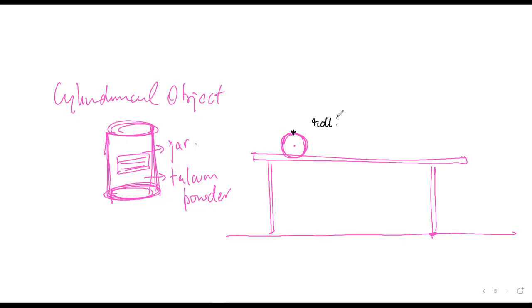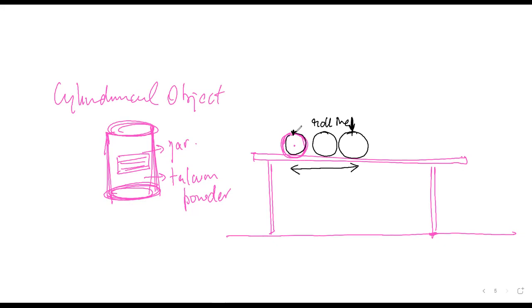Then you roll this cylindrical object. When it rolls, what you will observe is that when this point comes on the top again, this whole distance covered will be equal to the circumference. Satya, have you understood? Yes sir.